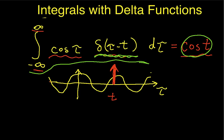One last thing and then we'll be done. This could be any function of tau — it doesn't have to be a cosine. I've used cosine as the example, but any function of tau here turns out to be that function evaluated at t. So that concludes this video on integrals with delta functions.